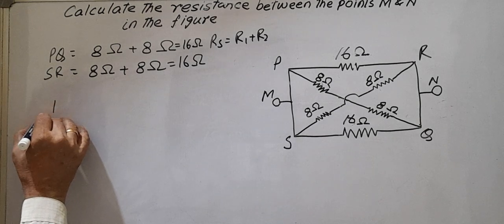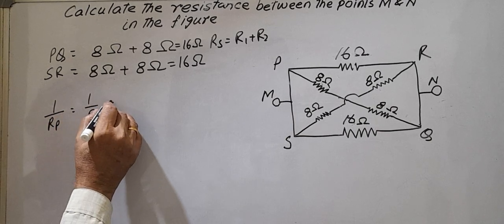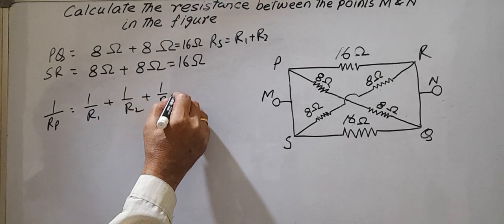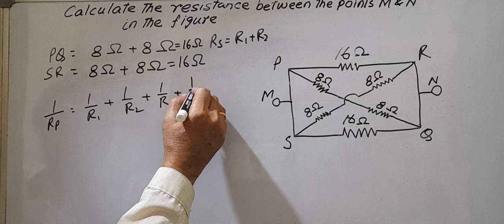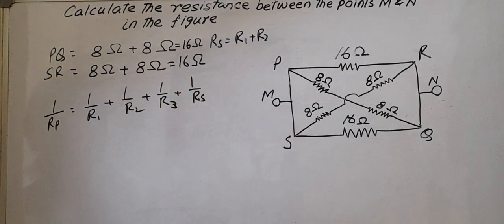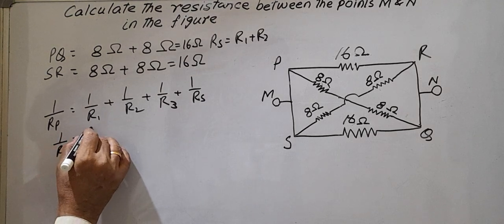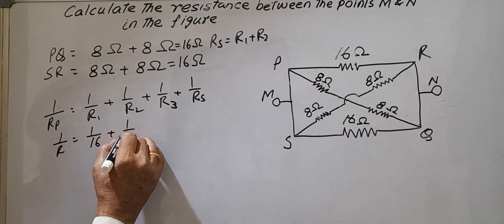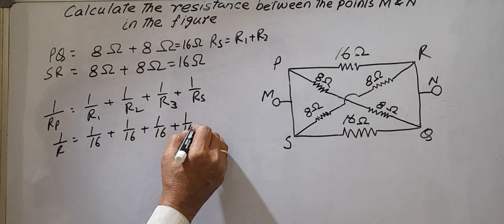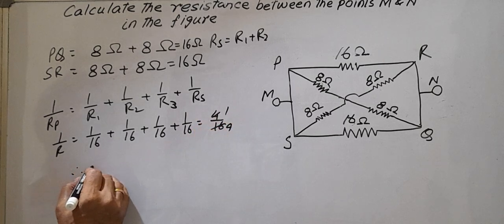And this is 16 ohms. These 16 ohm resistances are in parallel connections. So 1/Rp equals 1/16 plus 1/16 plus 1/16 plus 1/16, which equals 4/16, which equals 1/4.